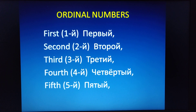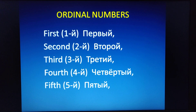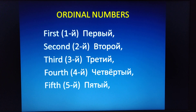Now the ordinal numbers. First is Per-vi-e. Second is If-ta-ro-ay. Third is Tre-chi-e. Fourth is Chit-ve-ur-ti-e. And fifth is Pya-ti-e. Again we will repeat: Per-vi-e. If-ta-ro-ay. Tre-chi-e. Chit-ve-ur-ti-e. And Pya-ti-e.